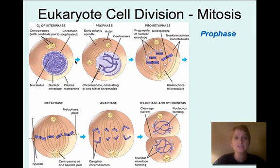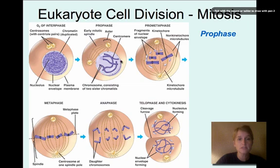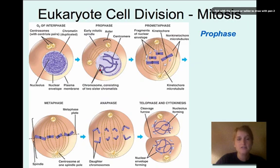The first phase of mitosis is prophase. In prophase, the chromosomes look a little different — there are two sister chromatids connected in the center. Another thing happening in prophase is that the nucleus is disintegrating, so you won't see a well-defined nucleus anymore. There's also a spindle developing, which is the structure that will actually pull the chromosomes to either side — it's just beginning to form in prophase.